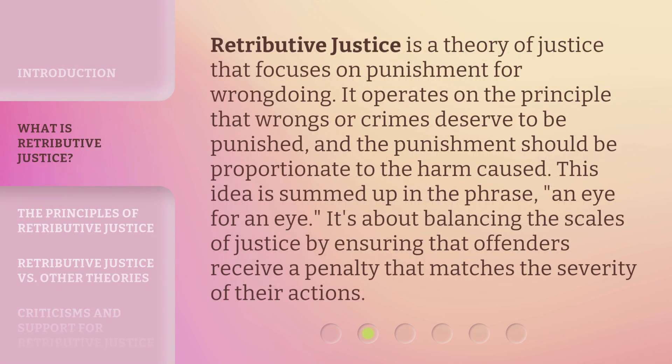Retributive justice is a theory of justice that focuses on punishment for wrongdoing. It operates on the principle that wrongs or crimes deserve to be punished, and the punishment should be proportionate to the harm caused. This idea is summed up in the phrase 'an eye for an eye.' It's about balancing the scales of justice by ensuring that offenders receive a penalty that matches the severity of their actions.